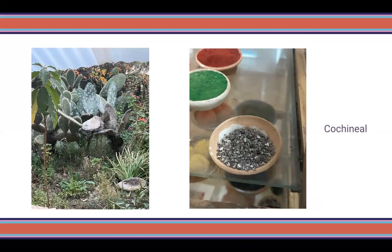Natural dyes were most often made from cochineal, an insect that, when mixed with different salts, produces various pigments. This practice is still in use today, as we saw examples of this in Chinchero, Amaro, and in Doña Russell Maria's Botanical Garden, which is pictured here.